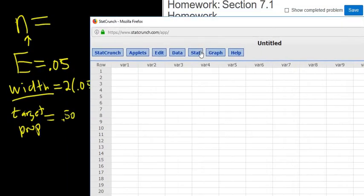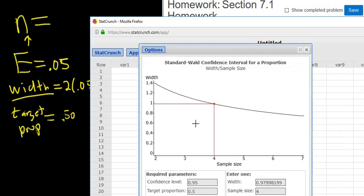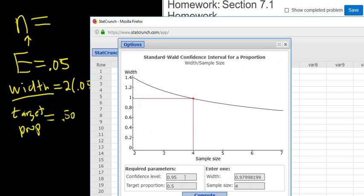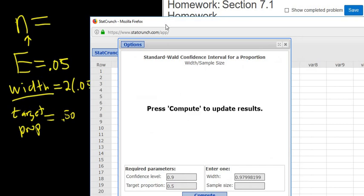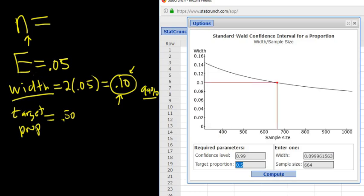So again, it's stat, proportions, one sample with sample size. We change the level to, I believe the level was 99. Leave the target proportion alone. No info was given. And then the width is 0.1. Click compute. And there's the answer, 664.